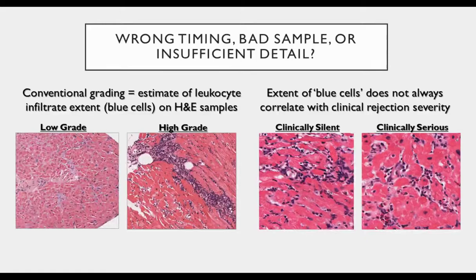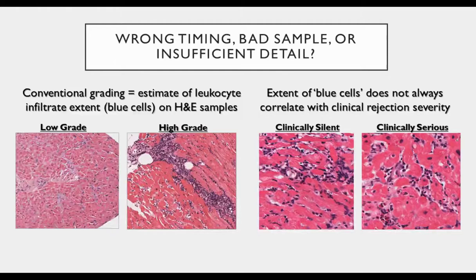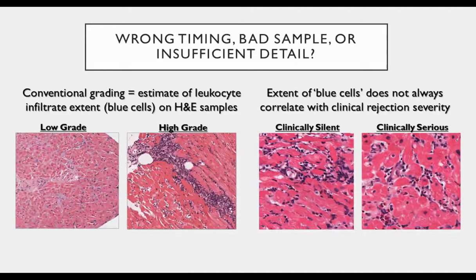Examining the biopsies on this slide, on H&E it can be pretty obvious when there's a difference in the number of little blue cells between low-grade and high-grade rejection. But when we look at discordant cases, we see two slides with the same histologic grade but very different syndromes. The patient on the left was essentially still running three miles a day — completely asymptomatic with a lot of little blue cells on their biopsy. The patient on the right was in cardiogenic shock. It's hard to appreciate the difference in those presentations just based on the little blue cell counting done in traditional H&E histologic analysis.